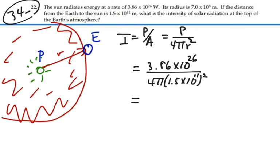1,365.2 watts per meter squared. So based on this calculation, everywhere at that distance away from the sun, you would have an intensity of 1,365.2 watts per meter squared. And that would be the intensity of solar radiation at the top of the earth's atmosphere.